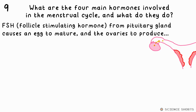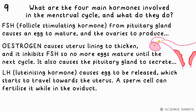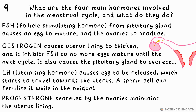FSH — follicle stimulating hormone — causes an egg to mature and causes the ovaries to produce oestrogen, which causes the uterus lining to thicken and inhibits FSH, so you only get one egg maturing per cycle. Oestrogen also causes LH — luteinizing hormone — to be produced, which causes the egg to be released. Finally, progesterone maintains the uterus lining.